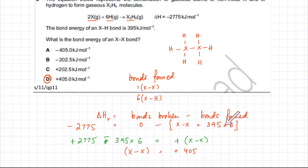And there's one bond of X-X that's being formed and there's six bonds of X-H that are being formed. And the energy for that is provided. And it's going to be exothermic. Bond formation is exothermic. And the enthalpy change of the reaction is also given, that's minus 2775. So I made X-X bond energy the subject of the equation, and I got plus 405 kilojoules per mole, which is the correct option, option D.